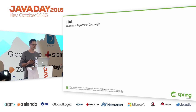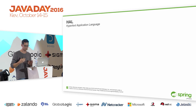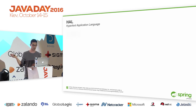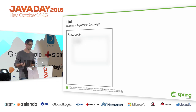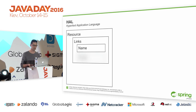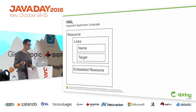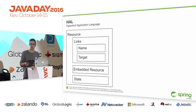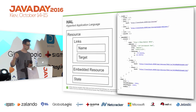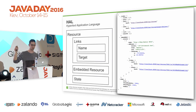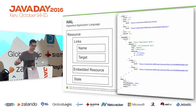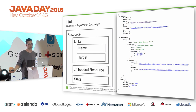What we need first is a hypermedia format that describes the resource. HAL is the Hypertext Application Language — a really simple, small format for hyperlinking resources. Basically, every HAL resource contains links (each with a name and target), can have an embedded resource, and has state. The HAL format defines underscore elements in your JSON response: there's '_links', '_embedded', and the page state from the server.